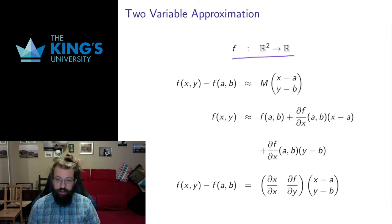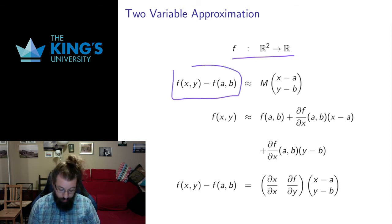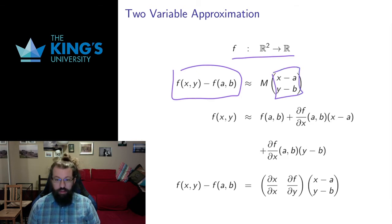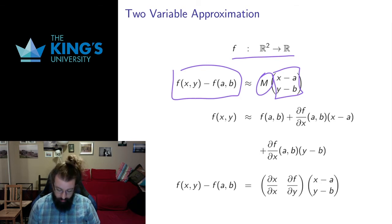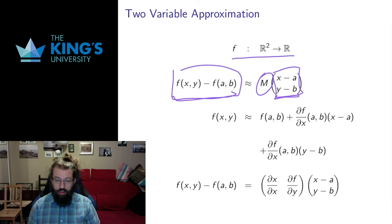Now say I have a scalar field with two inputs. If I shift the output to the origin and shift the input to the origin, I can think of this as being approximately like a linear function. A linear function is action by a matrix, so this would have to be a one-by-two matrix because it would act on a two-by-one column — taking two pieces of input and giving one piece of output. The question is: is there such a matrix?